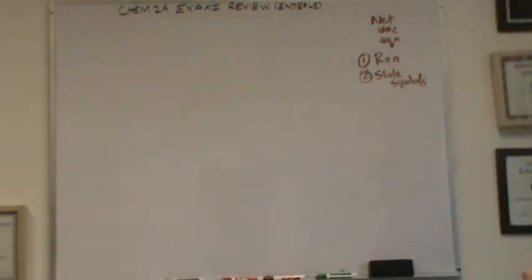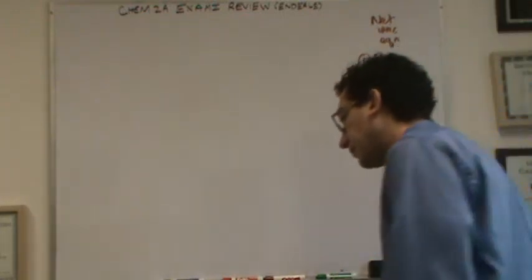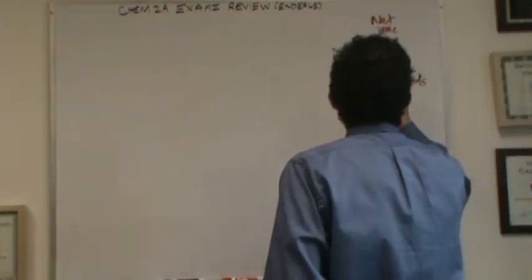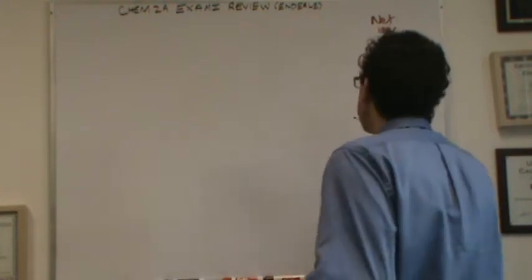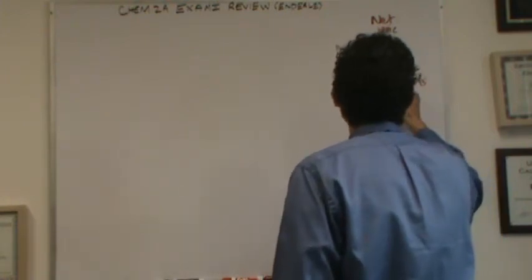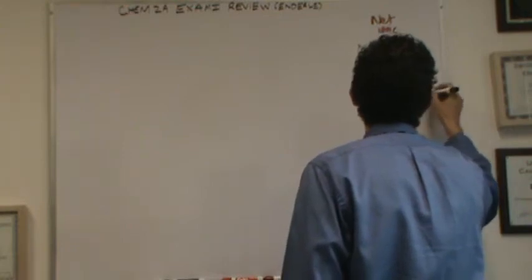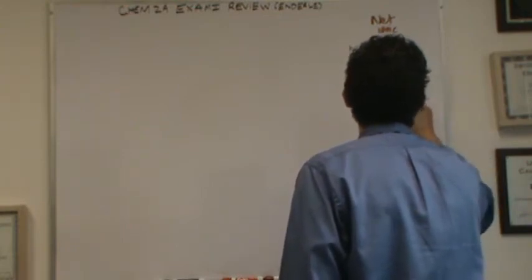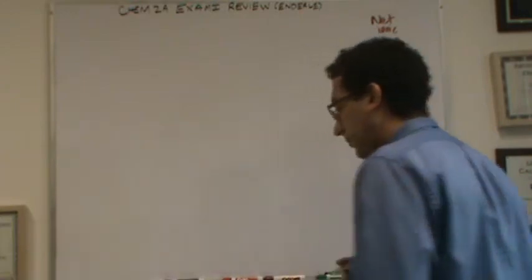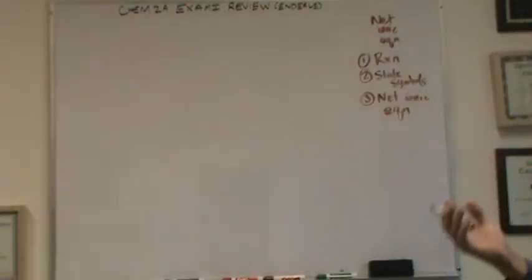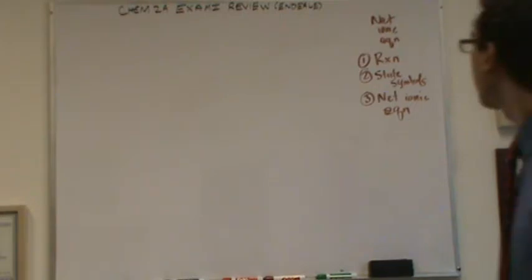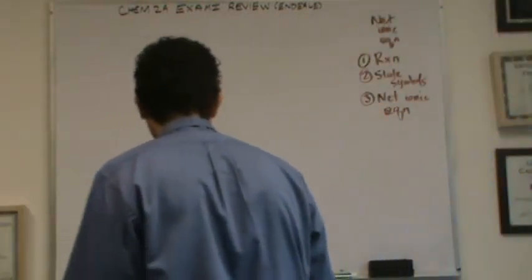So get those state symbols down, and sometimes you have to use the solubility rules. In other cases, it's just going to be general knowledge, all that stuff listed in my reader on page 30. And then finally, you get rid of the spectator ions, and you write the net ionic equation. So in order to do step three, the key part is determining which ones are strong electrolytes. Alright, so let's try an example of this.